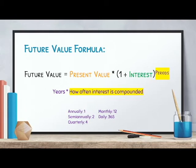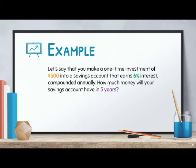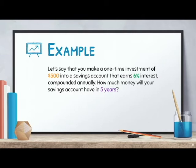Now that we've defined all the variables in the future value formula, I'm going to walk through an example using what we've learned. Let's say you have $500 and you make a one-time investment into a savings account. This savings account earns 6% interest compounded annually, and you want to know how much money will be in your account in five years.